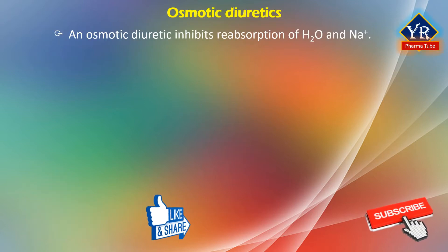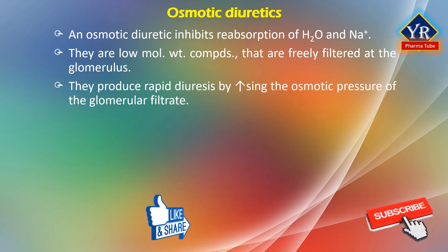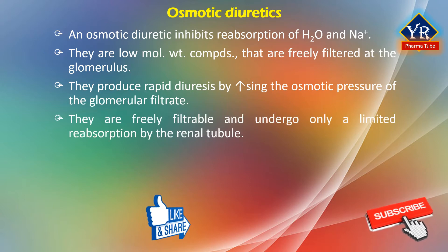An osmotic diuretic is a type of diuretic that inhibits reabsorption of water and sodium ions. They are low molecular weight compounds that are freely filtered at the glomerulus. These agents produce rapid diuresis by increasing the osmotic pressure of the glomerular filtrate. The increased osmotic pressure causes water to be pulled from extravascular sites into the bloodstream, thereby increasing blood volume and decreasing reabsorption of water and electrolytes in the renal tubules. They are freely filterable at the glomerulus and undergo only limited reabsorption by the renal tubule.